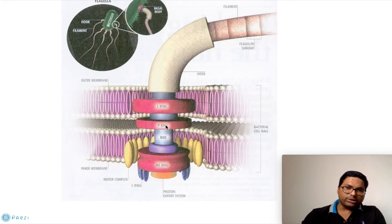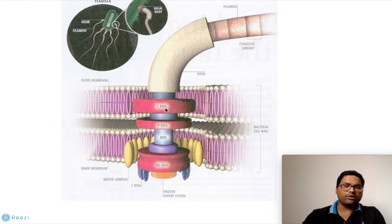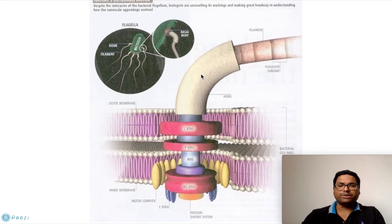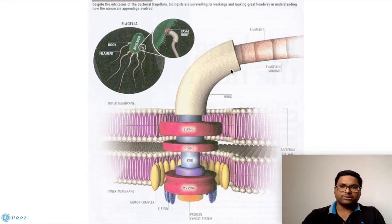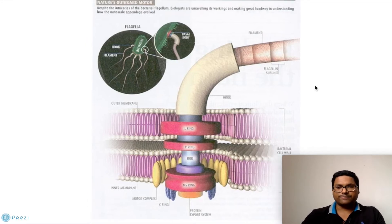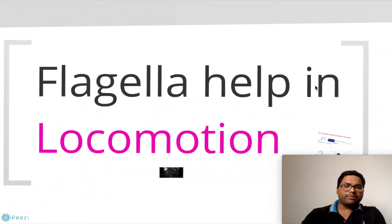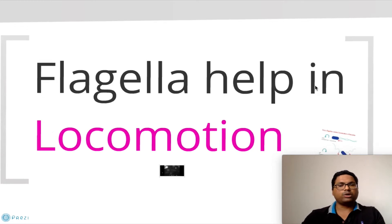There is also a motor-like portion with a ring arrangement inside the plasma membrane — this is the basal body. So we have three structures: filament, hook, and the basal body, which acts as the motor that moves the flagella. The very important function of flagella is locomotion — helping the bacteria move from one place to another.